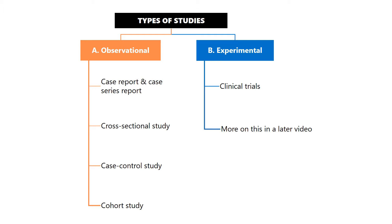We can divide all studies into two major types: observational and experimental. The basis for this division is the assigning of the exposure. In experimental studies, we do assign the exposure — we bring a group of people and give them some intervention, putting them under certain exposure and then seeing what happens.